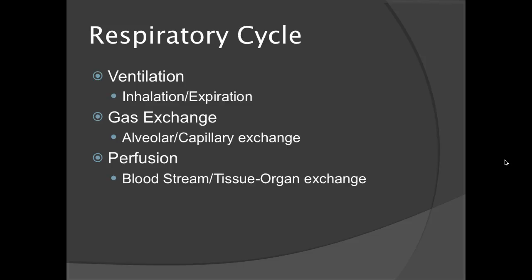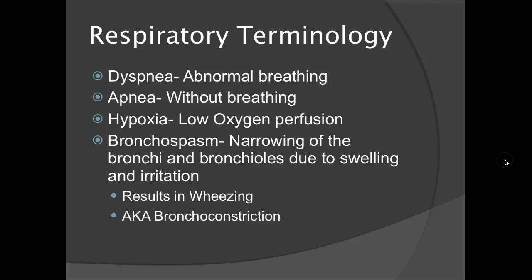The respiratory cycle consists of ventilation — inhalation and expiration — then gas exchange at the alveolar-capillary interface where oxygen moves into the bloodstream and cellular waste comes out into the alveolar space to be expelled through the lungs, and then perfusion, where the bloodstream carries oxygen to the tissues and organs. Key terminology: dyspnea is abnormal breathing; apnea is no breathing at all; hypoxia is low oxygen perfusion; bronchospasm is the narrowing of the bronchi and bronchioles due to swelling and irritation, usually resulting in wheezing, also known as bronchoconstriction.